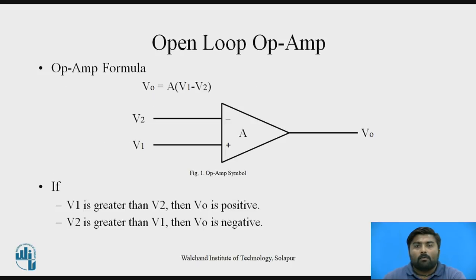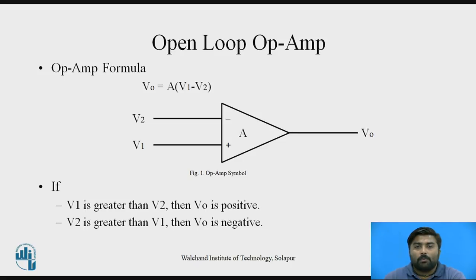Now, open-loop op-amp. What is meant by open-loop op-amp? It is nothing but a simple operational amplifier which has two inputs and one output. For this, it has a formula VO equals A into bracket (V1 minus V2), where VO is the output voltage, A is the gain of the op-amp, and V1 and V2 are the two inputs.